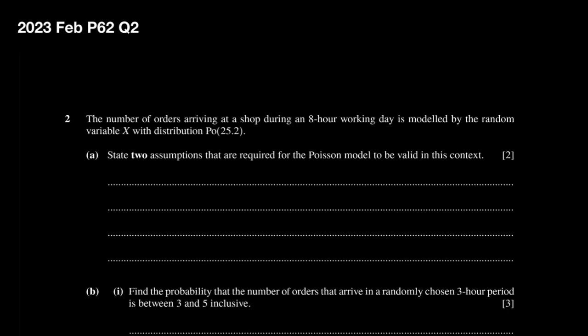February 2023 paper 62 question number 2. The number of orders arriving at the shop during an 8-hour working day is modeled by a random variable X with distribution Poisson 25.2. For the 8-hour working day the distribution has a mean of 25.2 orders.